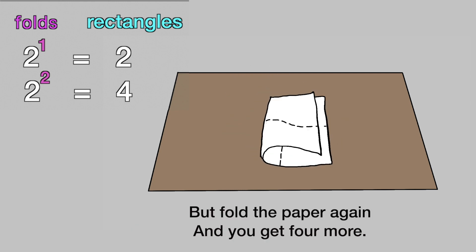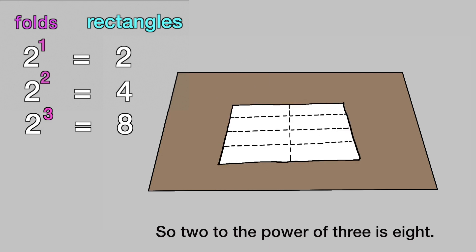But fold the piece of paper again, and you get 4 more. So 2 to the power of 3 is 8.